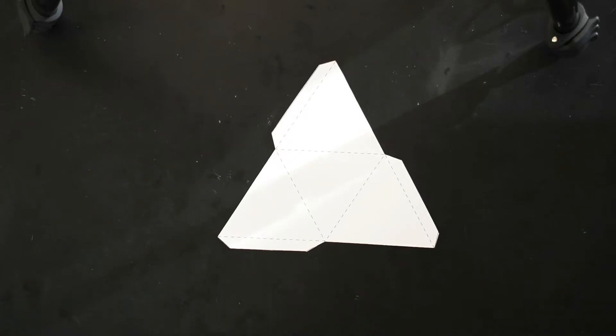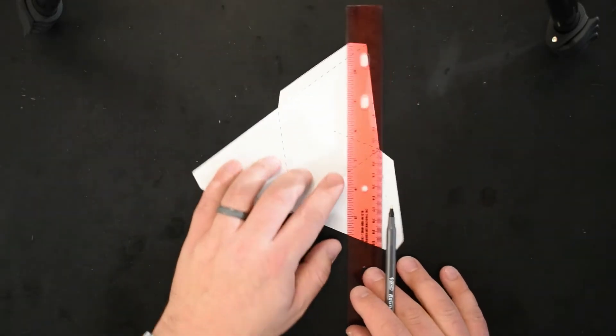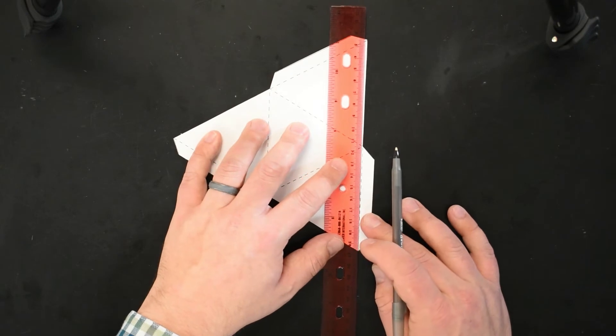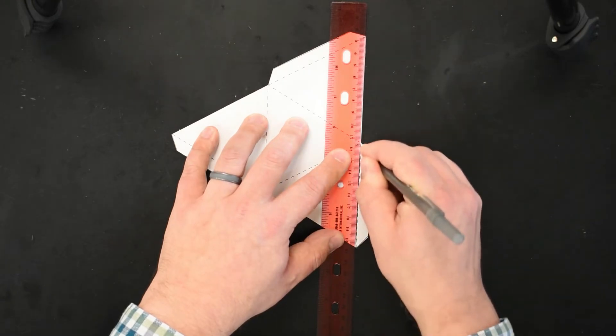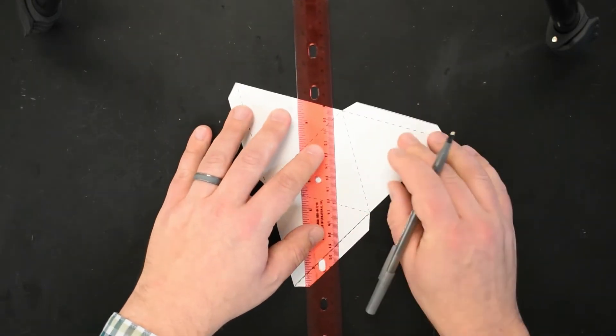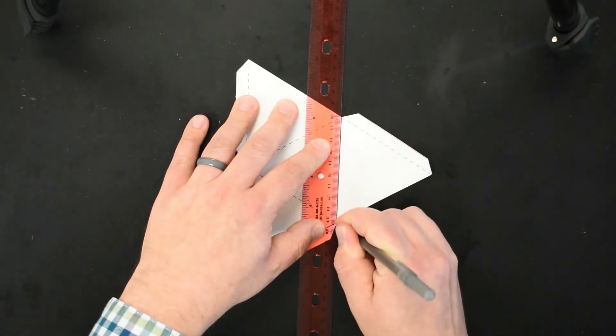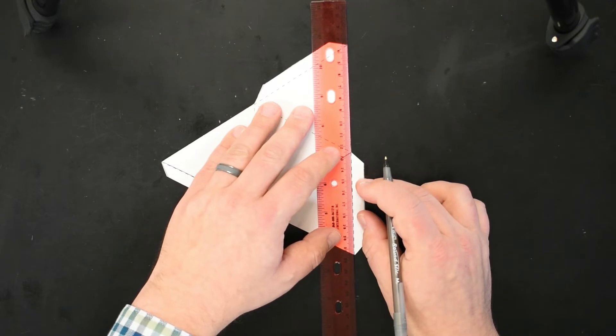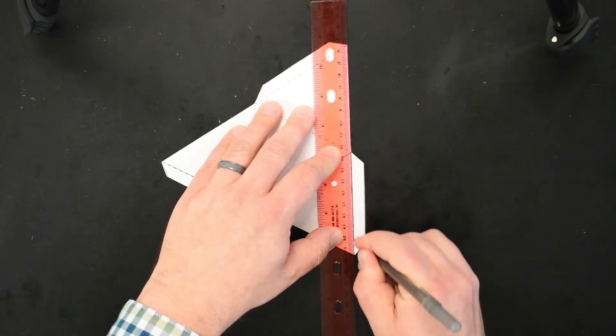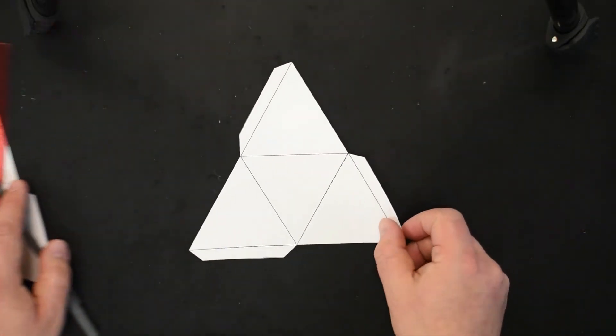Now we're ready to score the form. To do that, you're going to need your ruler and a pen. Put your ruler on all of the dotted lines and take your pen and go once, twice, three times on each dotted line. What the score actually does is put a groove onto the paper to make it easier to fold. Once you've gone all the way around, it's going to look like this.